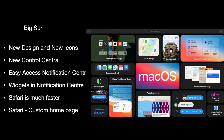Safari in Big Sur is said to be 50% faster than Chrome, so web browsing will be much quicker. You can add custom images to your Safari home page, and there are website translation features — you can completely switch a website's language with one click. There is also a Privacy Report feature for any page you're accessing in Safari.